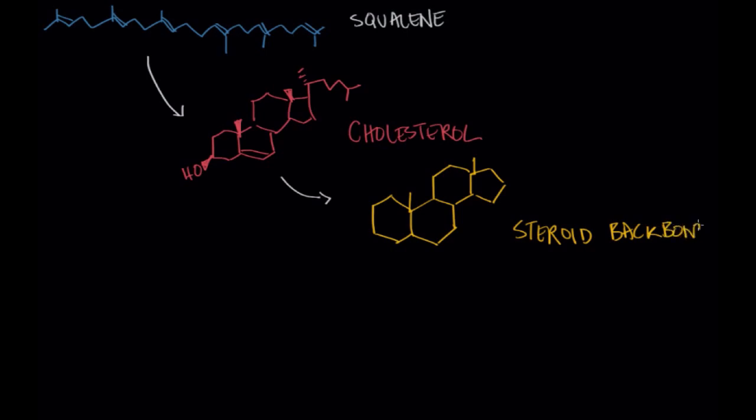And so these are the four characteristic rings of the steroid backbone. And as you can see we are a really long way off at this point from the very beginning place that we started which was that isoprene unit.